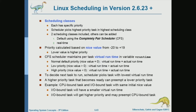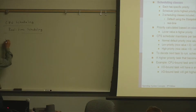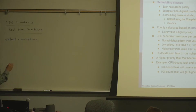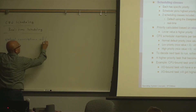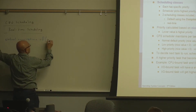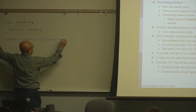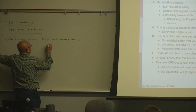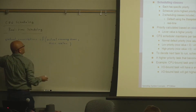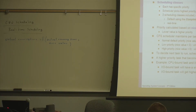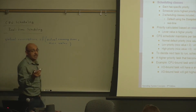The CFS scheduling algorithm is based on the virtual running time. A process is selected based on the virtual running time. The virtual running time is a function of two things: the actual running time and the nice value. The actual running time is the length of the last CPU burst, or it's an estimated CPU burst length based on history.